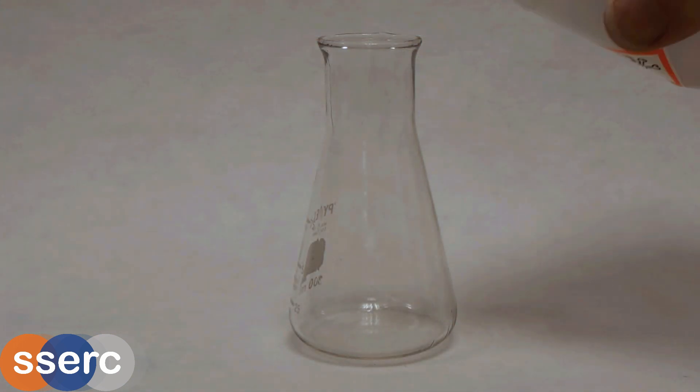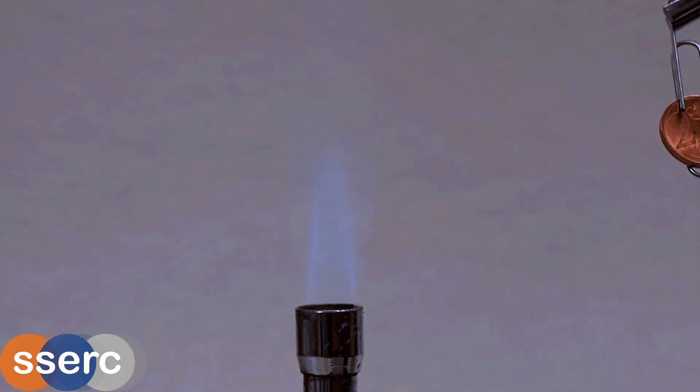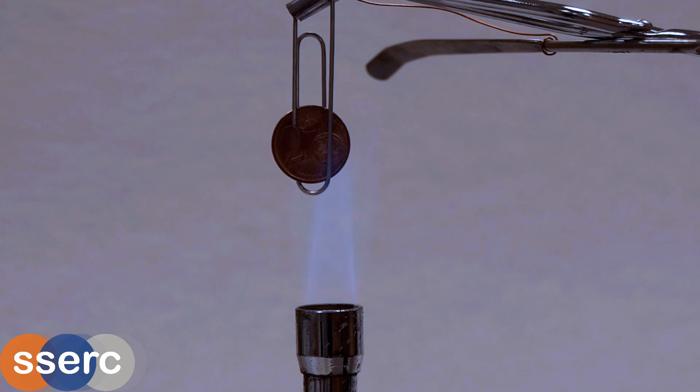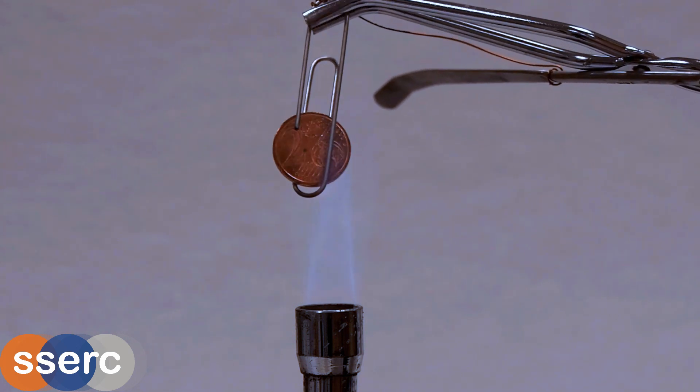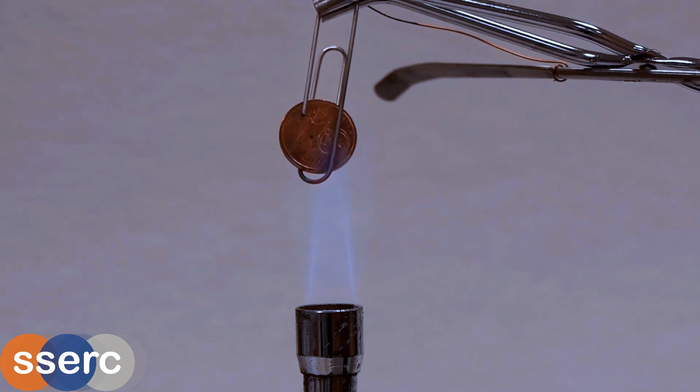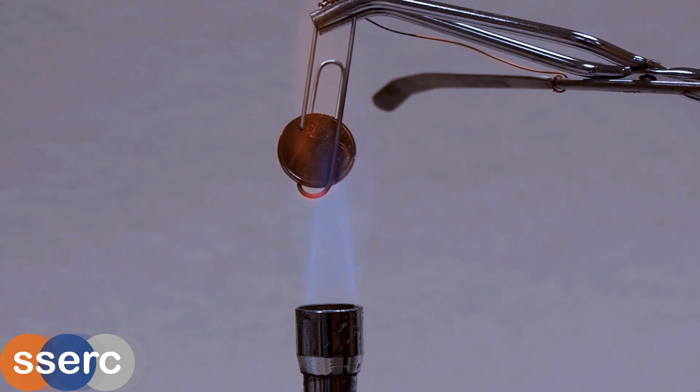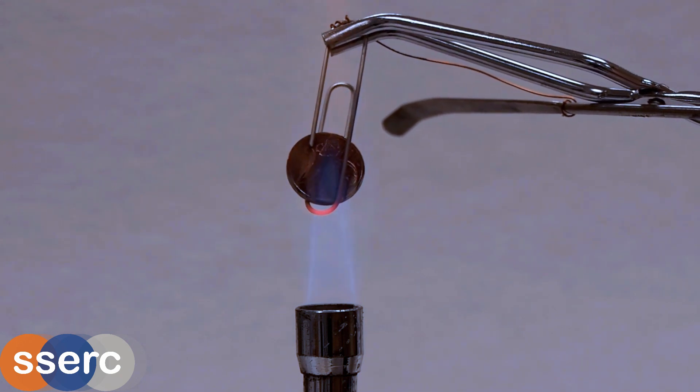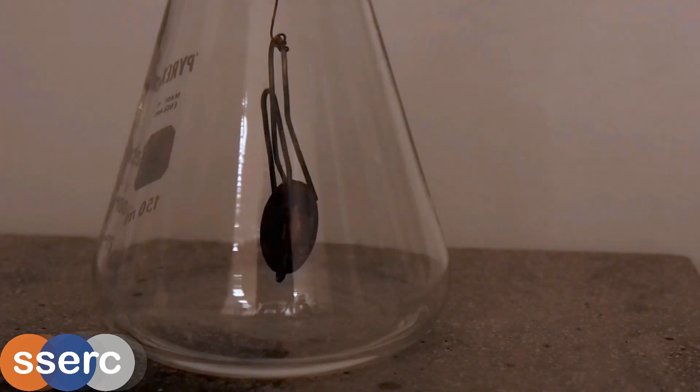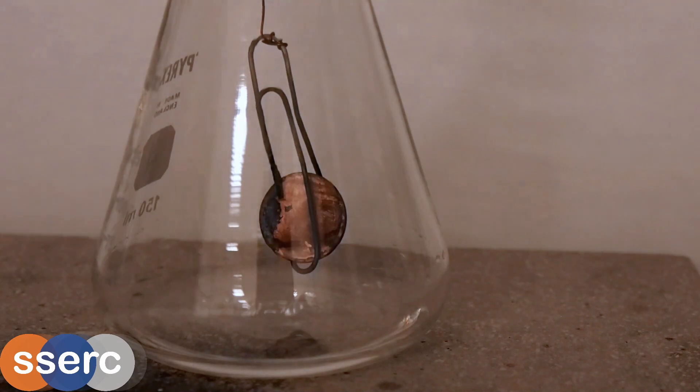Now we place some ethanol in the bottom of the flask and we are ready to go. We heat the copper coin strongly until it is close to red hot. Now take the coin out of the flame and as quickly as possible dangle it in the flask filled with ethanol vapor. The spatula sitting on top stops it falling in.